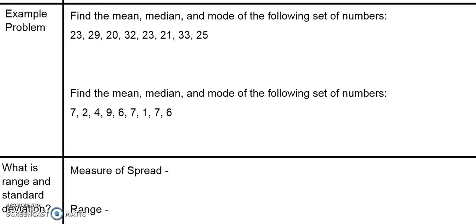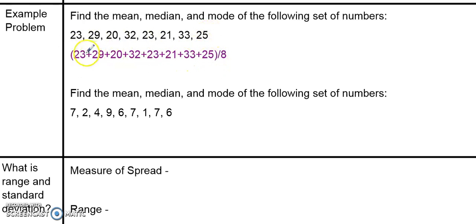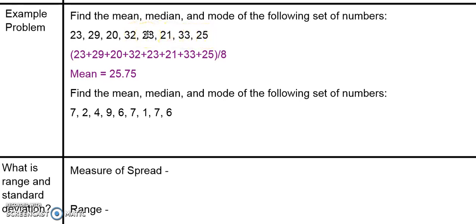First, let's try finding the mean or the average. Remember, to find the mean we've got to add up all the values and divide by the number of values we have. I added up all the values here and divided by eight because there are eight different data points. If you put this into the calculator all at once, just remember to put parentheses around the addition of all the values — because order of operations tells us division happens before addition, and if you drop the parentheses, you'll get the wrong answer. When I add them all together and divide by eight, I get a mean of 25.75. That makes sense because looking at the data set, the numbers are kind of in the low 20s or high 20s, some in the 30s, so about 25.75 makes sense.